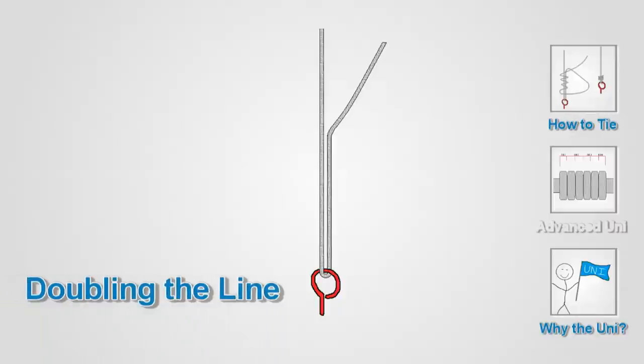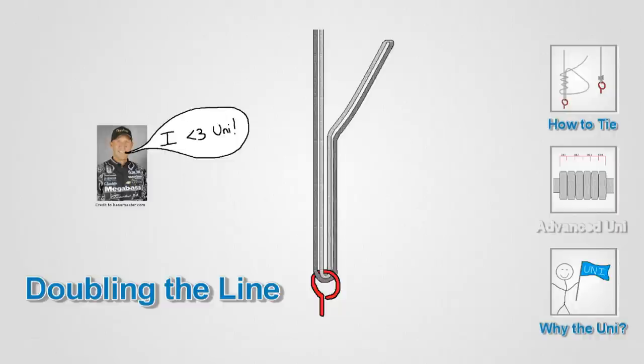The Uni Knot is a very strong knot by itself. But doubling the line like you would do to start a Palomar is going to give you an even stronger knot. Big time advocates of this knot like Elite Series Pro Aaron Martins will always double the line on the Uni.